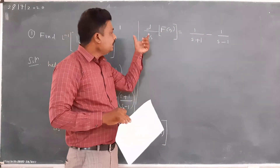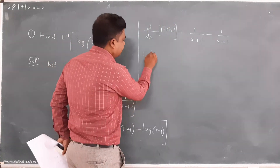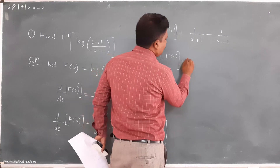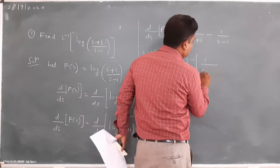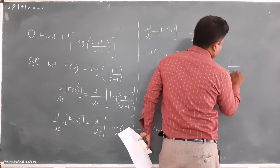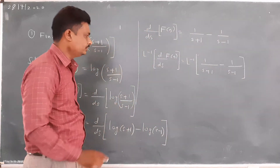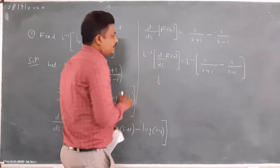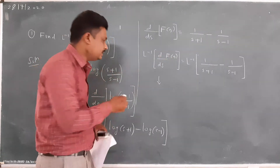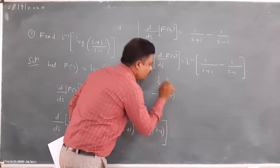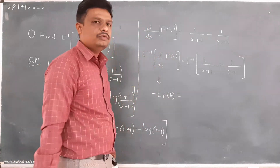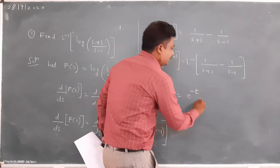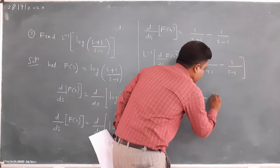Now I will apply inverse Laplace on both sides. So L⁻¹{d/ds f(s)} = L⁻¹{1/(s+1)} − L⁻¹{1/(s-1)}. These two functions are in standard form. L⁻¹{d/ds f(s)} is given by −t · f(t), which equals e^(−t) minus e^(+t).